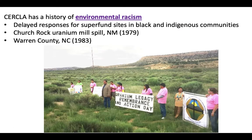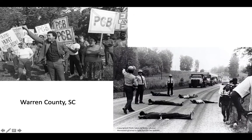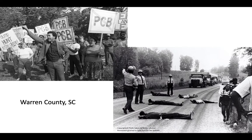Unfortunately, CERCLA has a history of environmental racism — responses for cleaning up Superfund sites in Black and Indigenous communities have historically been delayed. Examples include the Church Rock uranium mill spill in New Mexico in 1979, which occurred on Indigenous land, and Warren County, North Carolina in 1983, where a landfill leaching PCBs — polychlorobiphenyls — was built in a predominantly Black community. Despite known issues, cleanup took a very long time and required significant protests. This essentially started the environmental justice movement in the 1980s.